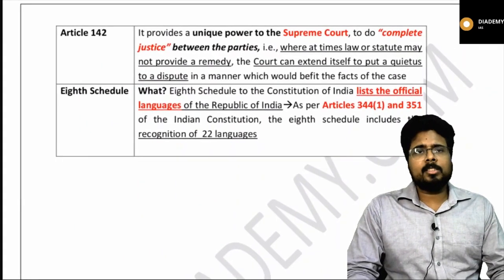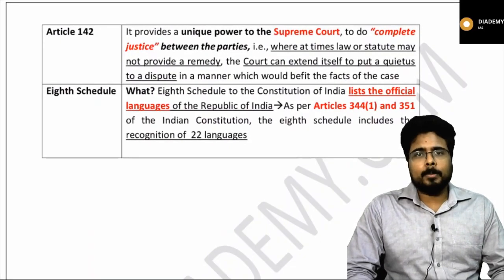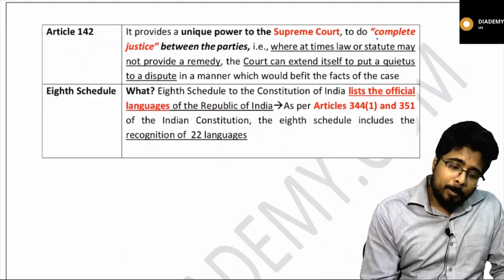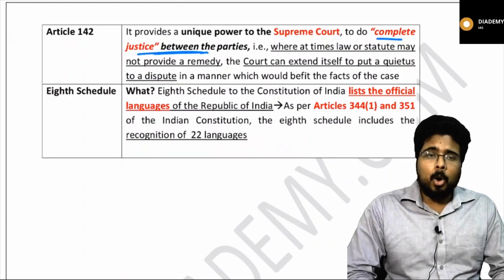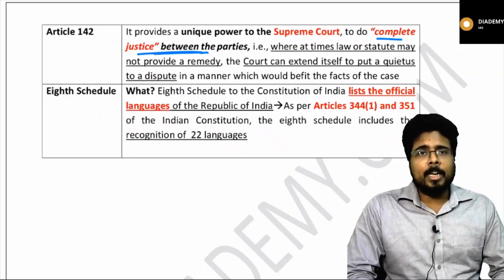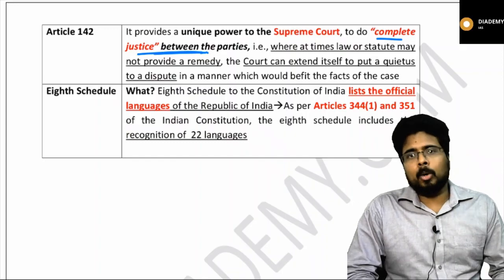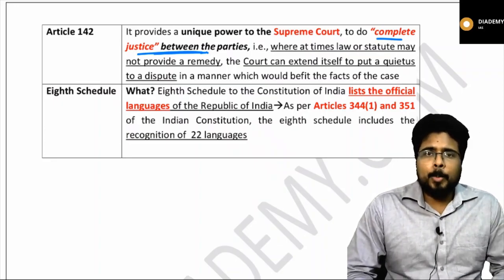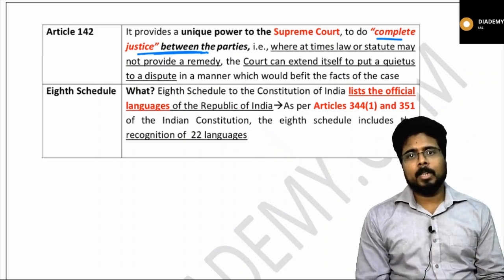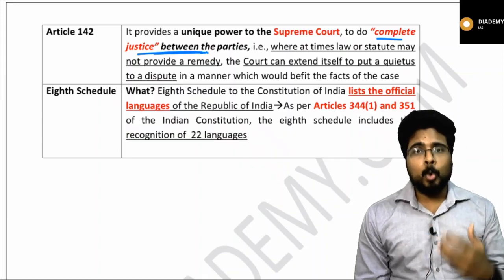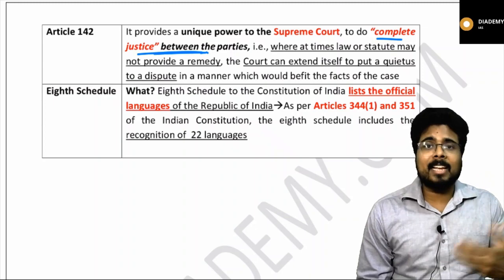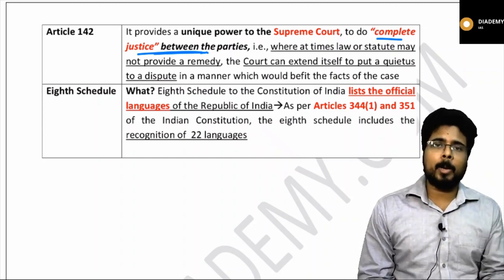Article 142 was in news. Article 142 provides a unique power to the Supreme Court. The Supreme Court can take any executive or legislative decision in order to do complete justice between the parties where law or a statute does not provide a remedy. This was in news because using Article 142, the Supreme Court took a decision in the Ram Janmabhoomi case. The Supreme Court gave a verdict that the entire Ram Janmabhoomi site belongs to the Hindu community, and using Article 142, took the decision of granting five acres of land to the Muslim community for building a mosque.